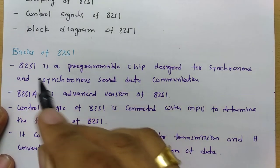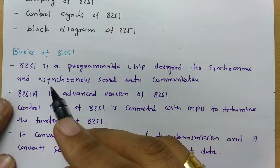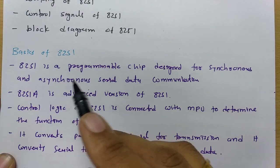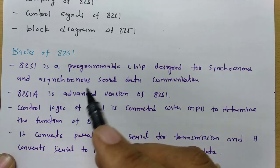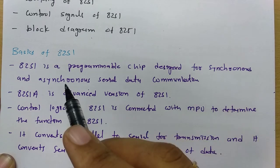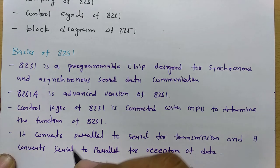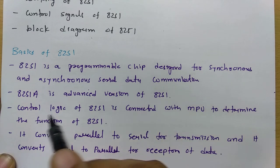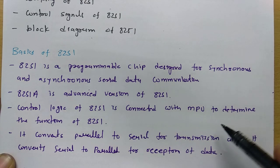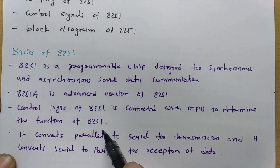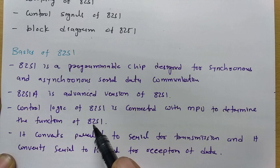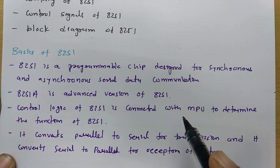8251 is a Programmable Chip designed for Synchronous and Asynchronous Serial Data Communication. 8251A is the advanced version of 8251. The Control Logic of 8251 is connected with the MPU to determine the function of 8251. There is a control register which we need to program, and by programming it we can define the functioning of 8251 when interfacing it with the microprocessor unit.